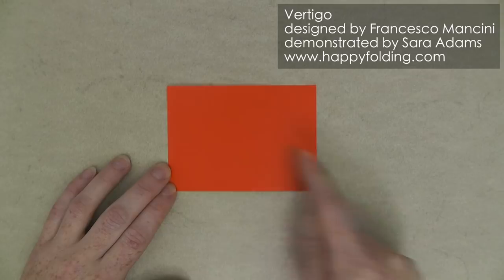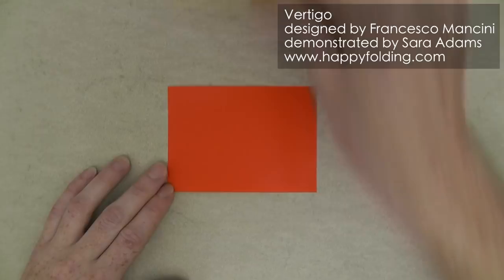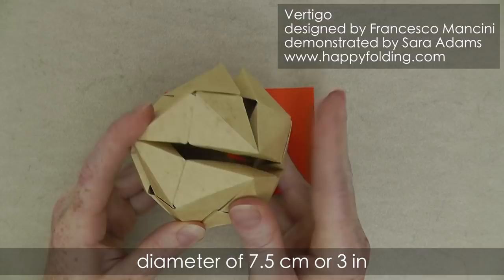The resulting model then has a diameter, that's about this distance, of 7.5 cm or 3 inches in the collapsed state.